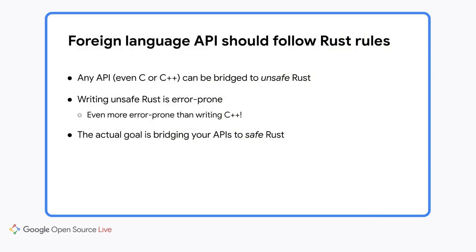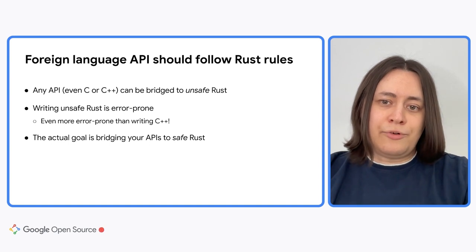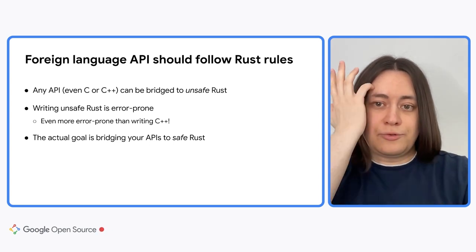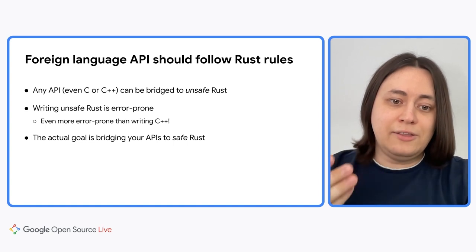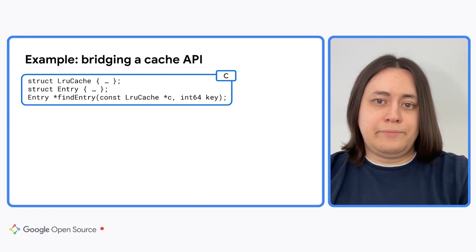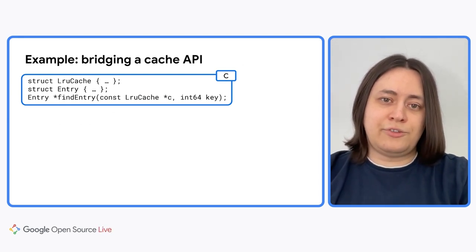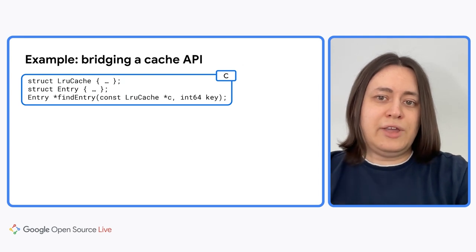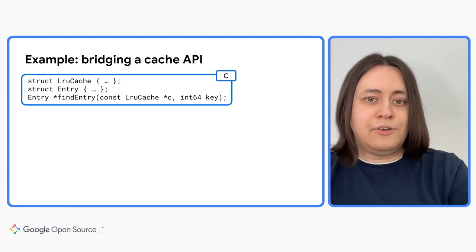It is possible to bridge any foreign language API to unsafe Rust. However, that forces your team to sprinkle snippets of unsafe Rust throughout the codebase, which is extremely undesirable. Unsafe Rust can be even more tricky to write than C++ because it has new kinds of undefined behavior compared to C++ — for example, stacked borrows violations. Your actual goal should be bringing your foreign language API to safe Rust, and that requires your existing C++ code to follow Rust's safety rules at least on the API boundary. Imagine that one of the central data structures in your application is an in-memory cache — it is used everywhere, so to start writing meaningful logic in Rust, you need to make this cache available to Rust code.